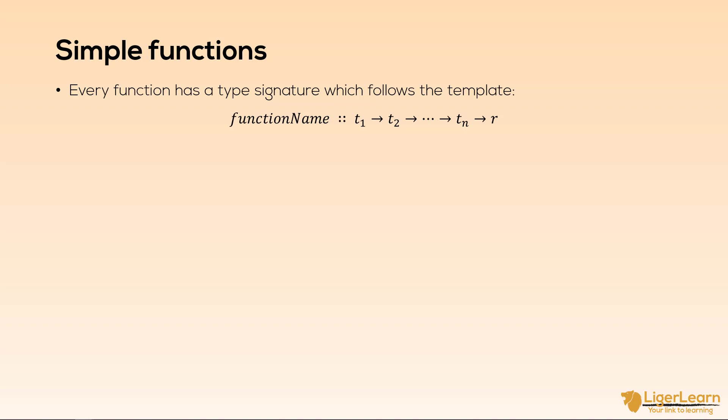Every function has at least one binding. Later on in the course when we come to pattern matching we will see functions which have multiple bindings, but for now all our examples are simple and will have only one binding. Take a look at the template for a binding which I've placed here. For each parameter type which is declared in the type signature there needs to be a parameter name given in the binding.